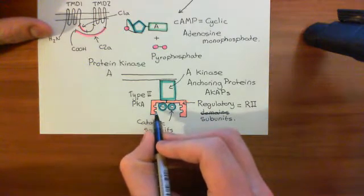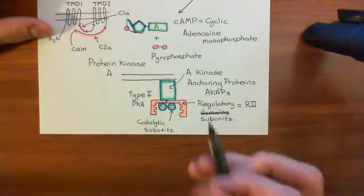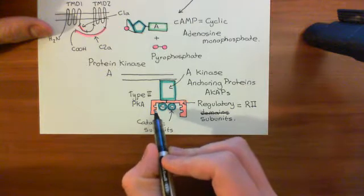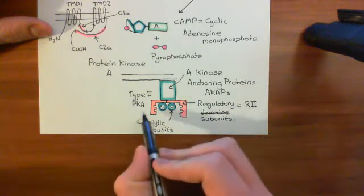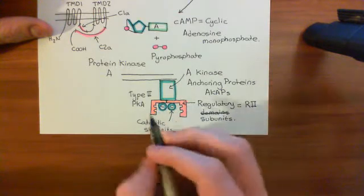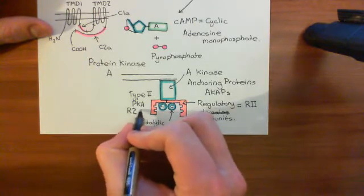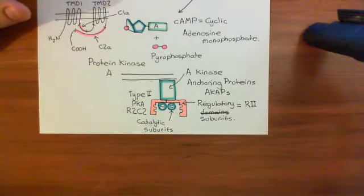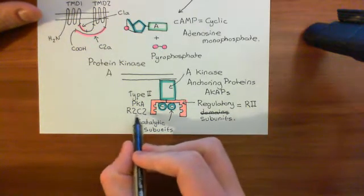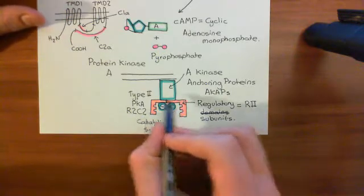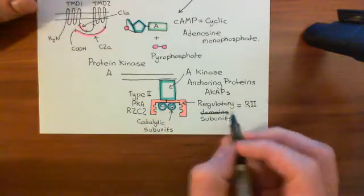Those invaginations are the cyclic AMP binding sites. Each regulatory subunit has two cyclic AMP binding sites, which means the whole complex — the type 2 protein kinase A — has four cyclic AMP binding sites. People often use the term R2C2 to describe protein kinase A, because it's a complex of two regulatory subunits with two catalytic subunits.